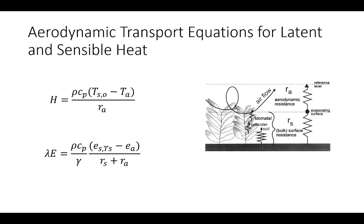We can describe the transport of water and heat from the surface using aerodynamic transport equations, where sensible heat depends on the temperature difference between the surface and the bulk air, while latent heat depends on the vapor pressure difference between the surface and the air. Aerodynamic resistance governs the rate of sensible heat flux, whereas for latent heat flux we must also consider surface resistance — stomatal resistance for a leaf, soil crust effects for bare soil, or a combined soil-vegetation resistance for a whole field.